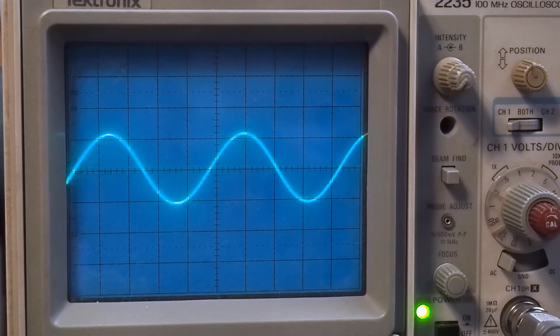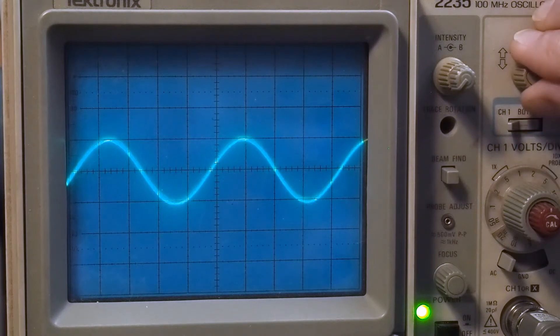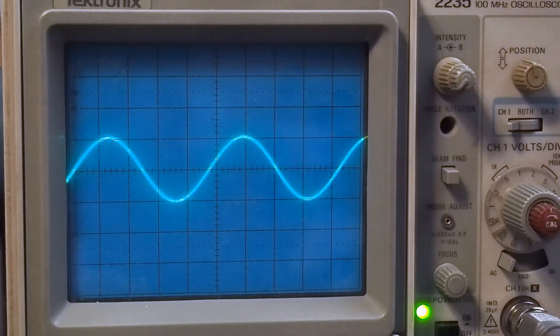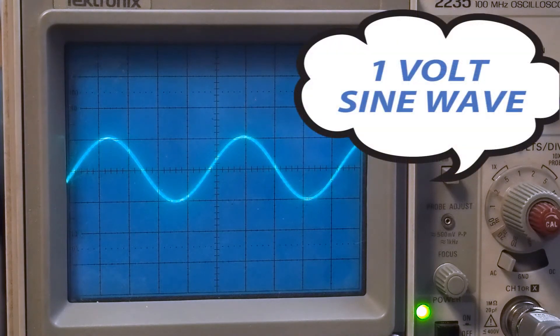So now we hook it up to our signal generator, and there we see our one volt sine wave. We can adjust it to get it, looks like right at a volt, just overlapping each of the half volt division lines. So there's a half volt, one kilohertz sine wave that we're going to be injecting into the amplifier.